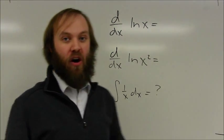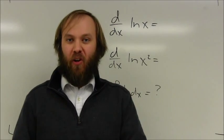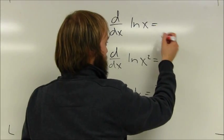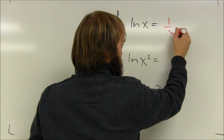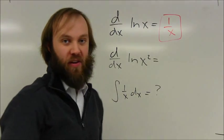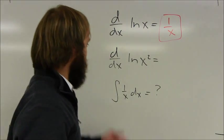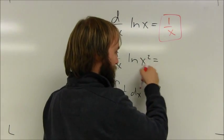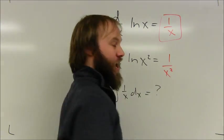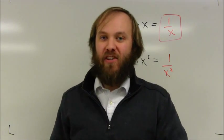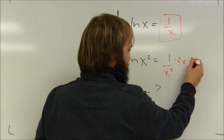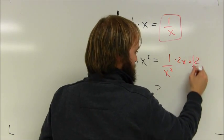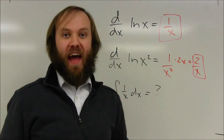Remember that the derivative of the natural log function is just the reciprocal of that inside function. So the derivative of the natural log of x would just be 1 over x. The derivative of the natural log of x squared would be the reciprocal of that inside function, 1 over x squared, but there's an inside function — the derivative of the inside function is 2x — so that whole thing simplifies down to just 2 over x.